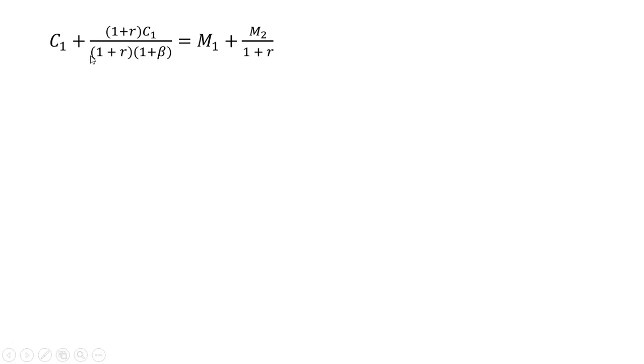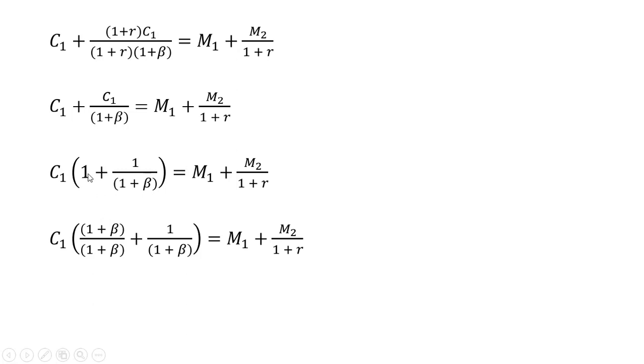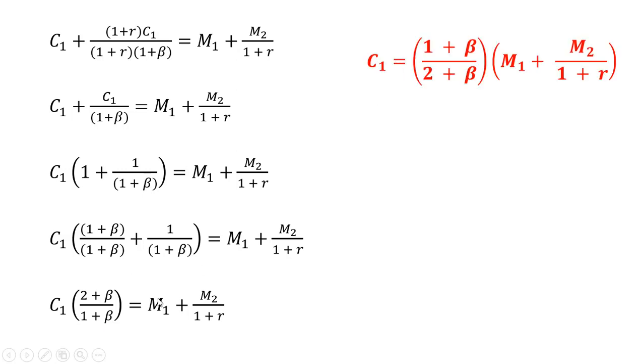Just rewriting that result from the last slide. We're going to now solve this for C subscript 1. So you'll notice here the 1 plus R divided by 1 plus R cancel. On the left-hand side, I'll factor out C subscript 1. Going to get a common like denominator here in parentheses so we can add those up. And the left-hand side becomes the following. And now just multiplying through by this reciprocal here, we'll get this result.